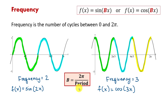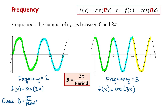Let's test this formula. For the first graph, we identified the first cycle — to find the period we take the rightmost value minus the leftmost value along the horizontal axis, which gives us pi minus zero, so the period is pi. Then frequency equals two pi divided by pi. We can divide out pi and get two, which is exactly what we found when we counted cycles by hand.